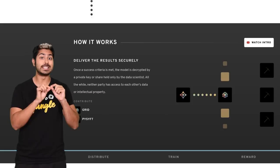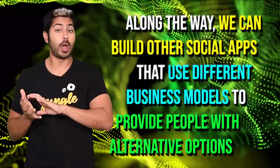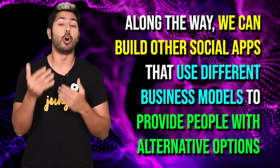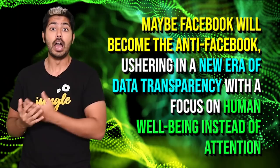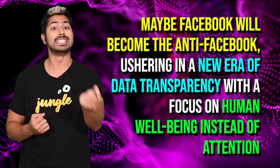So even though Facebook's business model is bad for the human psyche, in the short term we can protect ourselves by adopting anti-addiction techniques so that we get as much of the good from social media as we can while avoiding the bad. Along the way, we can build other social apps that use different business models to provide people with alternative options. And who knows — maybe Facebook will become the anti-Facebook, ushering in a new era of data transparency with a focus on human well-being instead of attention. What do you think? What does the anti-Facebook look like? Share your thoughts in the comment section, please subscribe, and for now, I've got to use Twitter. Thanks for watching.